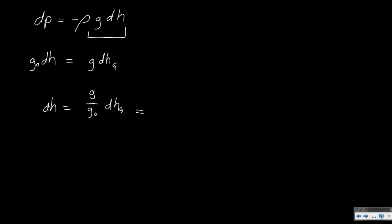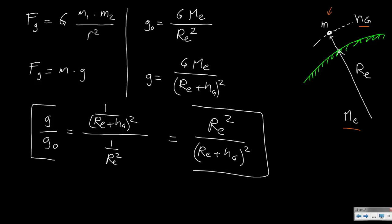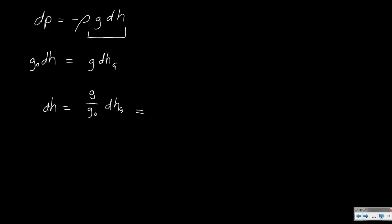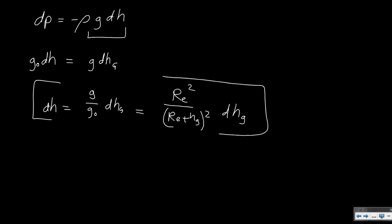For this we just derived a relation: Re squared divided by (Re + hg) squared, times dhg. So taking both sides of the equation, and because this is only true for small altitude changes, by making it into an integral we can solve this. Let's see what happens if we go to a certain altitude with this geopotential altitude.